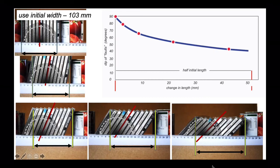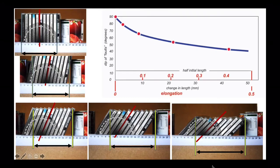We can make our length scale dimensionless by thinking about the change in length. The initial width was 103 millimeters, so 51.5 is half of the original length. That would be a stretching factor of an e of 0.5. So now elongation is dimensionless and we can relate that graph to the amount of elongation.